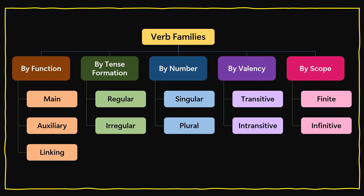We have an entire set of word families. Starting with verbs classification by function — under this we have main verb, auxiliary verb, and linking verbs. Category by tense formation: regular verbs and irregular verbs. By number: singular verbs and plural verbs. By valency: whether they are transitive verbs or intransitive verbs. By scope: whether they are finite verbs or infinitives.